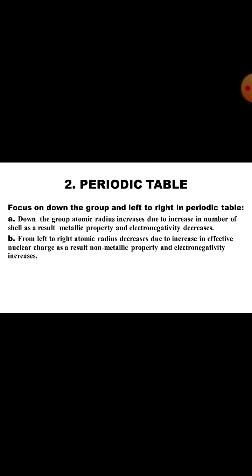Next, we have to know about the periodic table. In periodic table, we have to focus on down the group and left to right in the periodic table. The whole table basically belongs to two types of properties - atomic radius down the group and atomic radius from left to right.